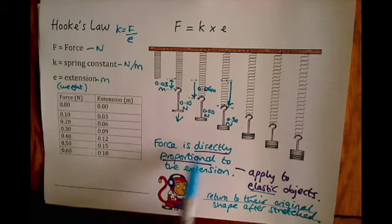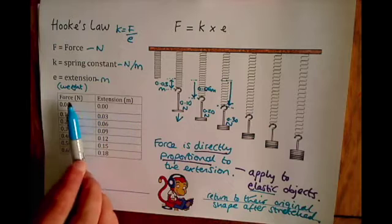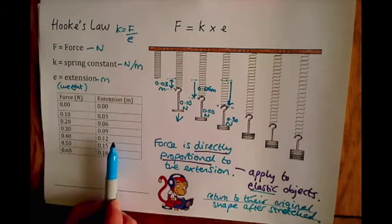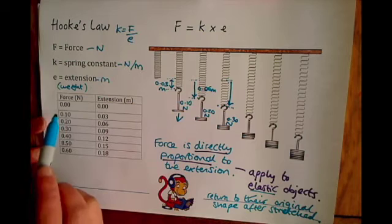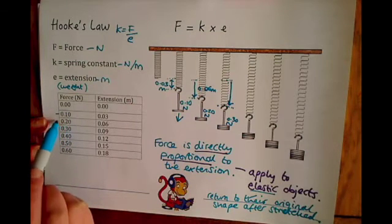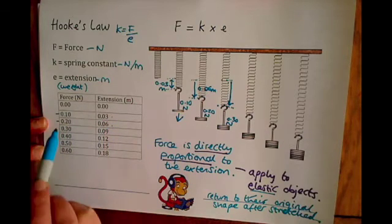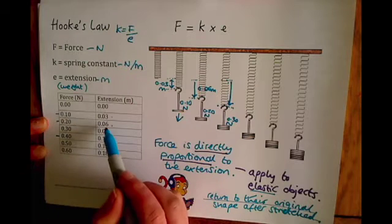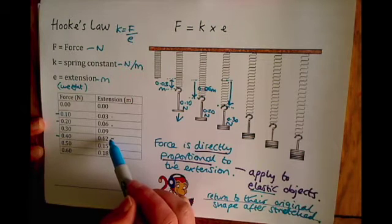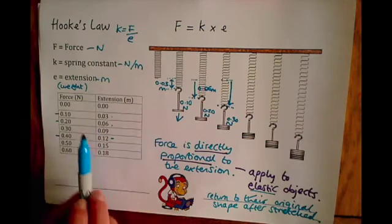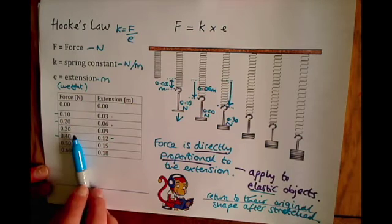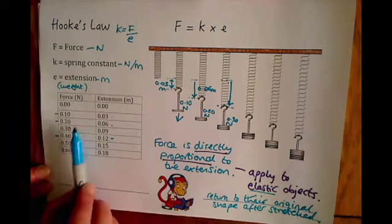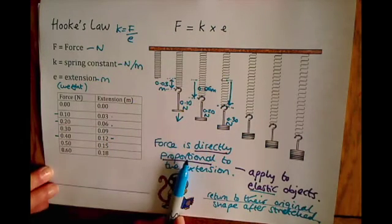Let's think about what directly proportional means — it's a very special relationship that force and extension has. It means if force increases, extension will increase by the same percentage or the same ratio. For example, in this data if we start off with 0.10 Newtons and that force doubles to 0.20, the extension also doubles. If you go from 0.2 to 0.4, you can see that doubling again: 0.2 doubles to make 0.4 Newtons and 0.06 doubles to make 0.12. So as force doubles, the extension also doubles. That's how we can tell it's directly proportional — if one goes up by a certain percentage or ratio, the other will also go up by the same amount.